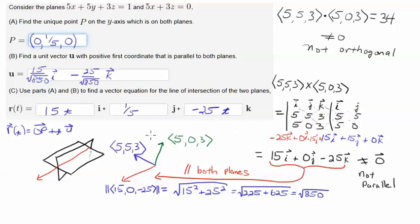So OP will just be the vector 0, 1/5, 0. I add that to t times this vector, and I will get 15ti plus 1/5, 0t, plus minus 25k, 25tk. And I have the equation for the line that is the intersection of these two planes. And that is the solution.